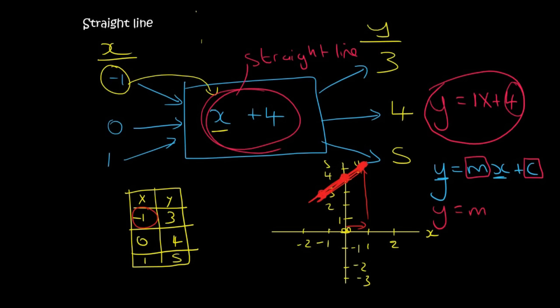So y equals mx plus c is the general formula of a straight line. Please remember that. y equals mx plus c, straight line. y equals mx plus c, straight line.